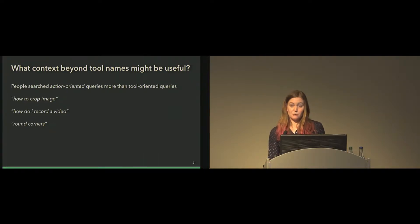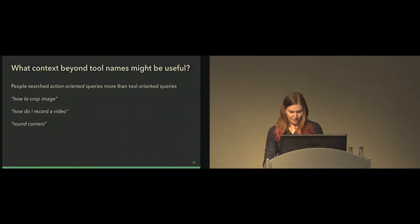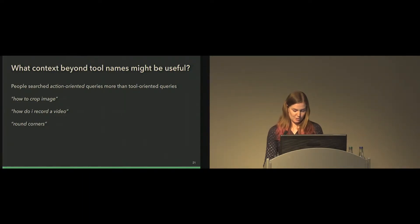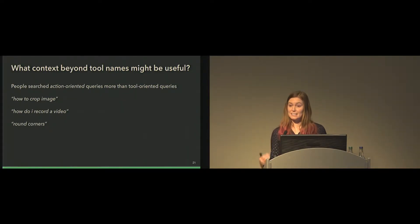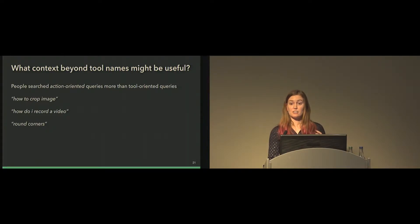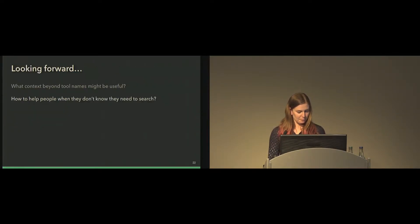Our current approach is somewhat limited by the accessibility features we can get, and for novices this information was pretty low-level. We're now thinking about how to interpret higher-level semantic information about what people are doing, and also looking more at what they're actually working on — the document or canvas — to see if there are properties we can gather from that.